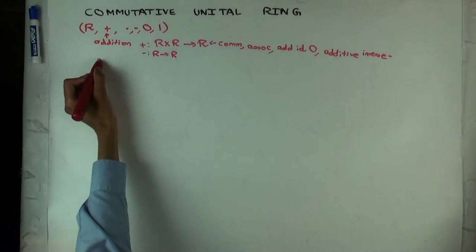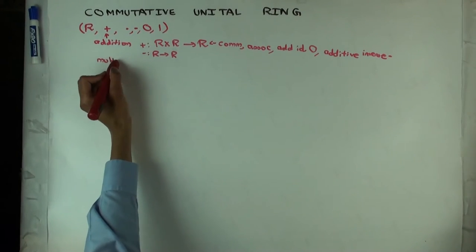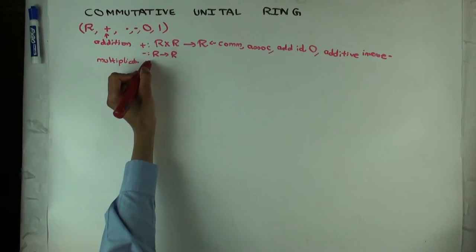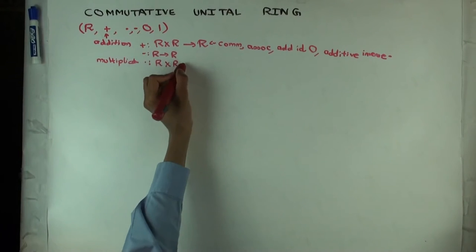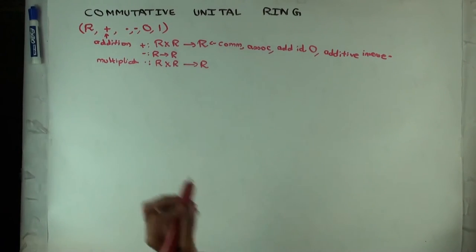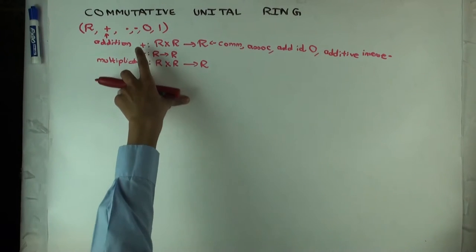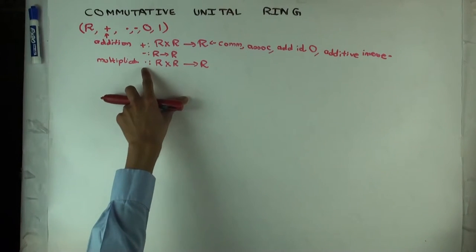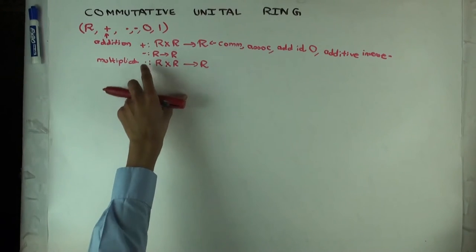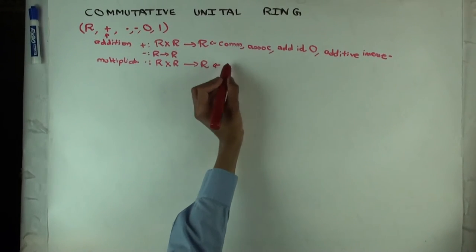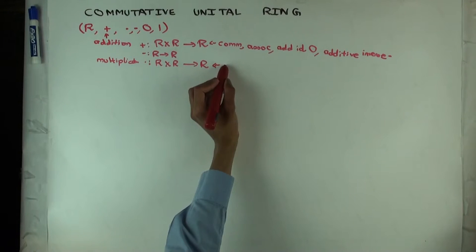So now we have multiplication. This we use the jargon associated with products. So we say product of two elements, we say we are multiplying the two elements. And in many cases, we drop the dot. So the dot is used like A dot B. Additionally, you say A plus B. Here you say A dot B, but many people just drop the dot and just write AB. AB just means A times B. So what condition does the multiplication satisfy? The same set of unions?